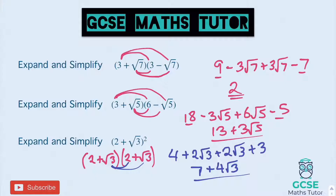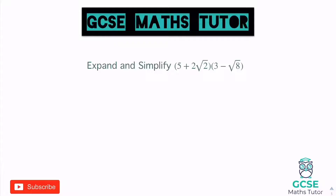Let's have a look at some slightly different ones. So expand and simplify this — slightly different look. We've got a number in front of the 2 root 2, and also a root 8 in there which isn't fully simplified. You don't have to simplify it at this point — we can see if we can simplify it later on. You wouldn't be wrong to simplify it now, but I'm just going to leave it and see what happens.